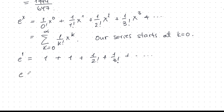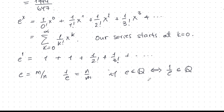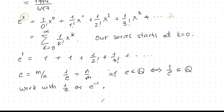Now, suppose e is rational, so e equals m over n. Then 1 over e equals n over m, and these two imply each other — e is rational if and only if 1 over e is rational. So instead of working with e, we can work with 1 over e, or equivalently e to the minus 1. We want to do this because if we put minus 1 into the series, we get an alternating series with beautiful properties we can exploit to prove irrationality.